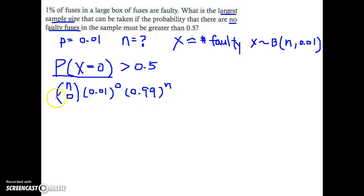So now let's try to simplify this. That gives me a 1. This gives me a 1. So I have 0.99 to the n is greater than 0.5.